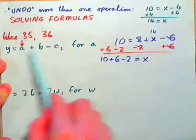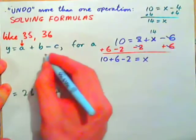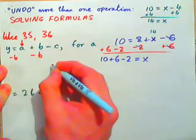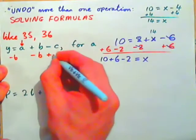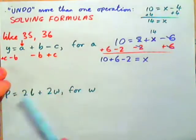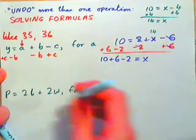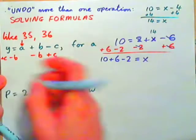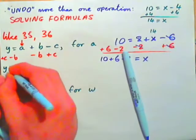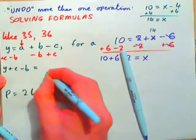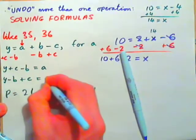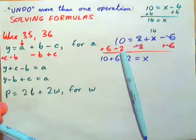So in this equation, to get A by itself we could subtract B from both sides and at the same time add C to both sides. We get Y plus C minus B equals A — or equivalently Y minus B plus C equals A. These are the same because we have a negative B and a positive C in both equations.